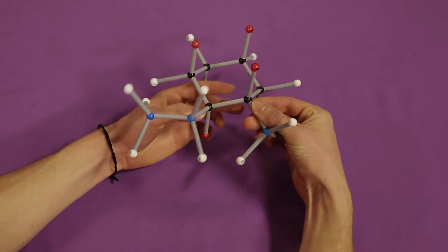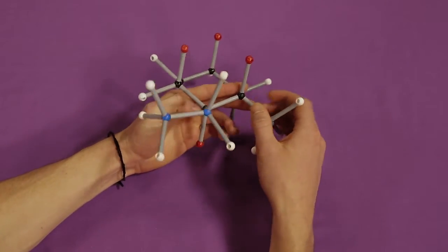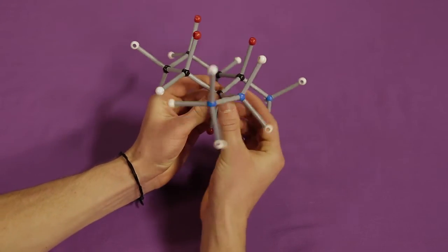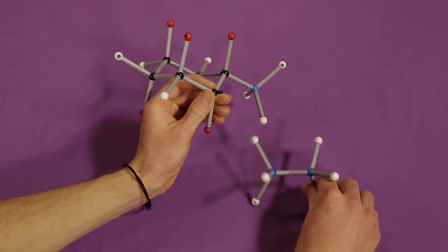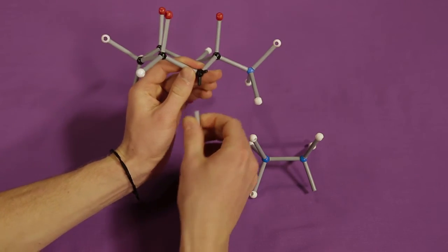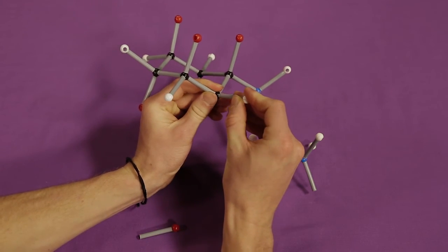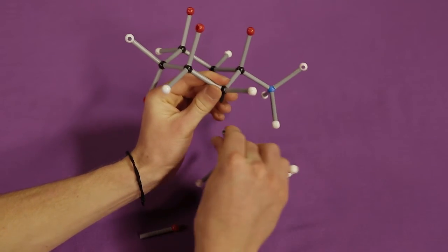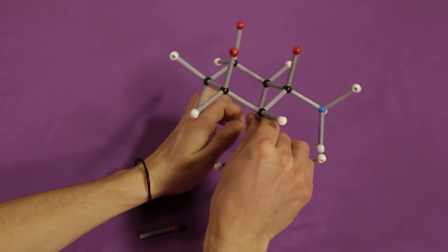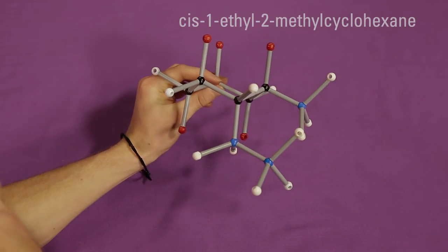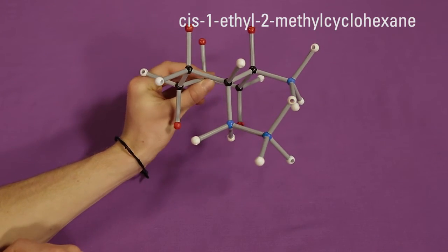For this isomer to be cis, we need the substituents to be pointing in the same direction. We can do this by switching one of the two substituents to the axial position. If we move the ethyl substituent, both substituents will be pointing down. Now we have a cis isomer, cis-1-ethyl-2-methylcyclohexane.